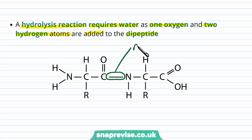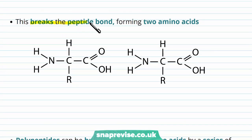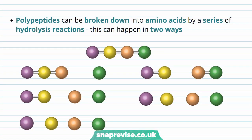We have a peptide bond between the two amino acids. To break this bond and give back the atoms each amino acid needs independently, we add H2O. One group takes part of the water and the other takes the rest, and then each amino acid can go its separate way. Adding water therefore breaks the peptide bond, forming two amino acids — H is replaced on the amino group of one amino acid and OH is replaced on the carboxyl group of the other. In the same way we build up polypeptides through condensation, we can break them down into amino acids through a series of hydrolysis reactions.